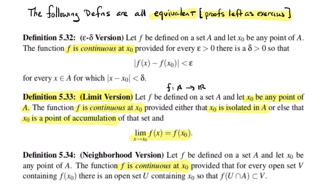The epsilon-delta version, Definition 5.32, lets you avoid distinguishing between isolated points and accumulation points. For any point x₀ in the domain, f is continuous there if for every epsilon you can find a delta so that function values are within epsilon of f(x₀) provided the inputs in the domain are within delta of x₀. If x₀ is an accumulation point, that's exactly the definition of limit.